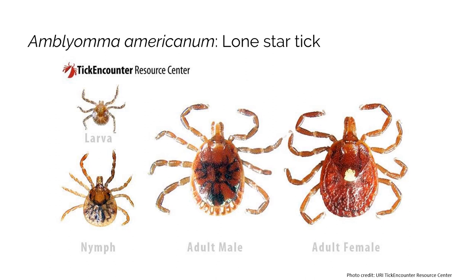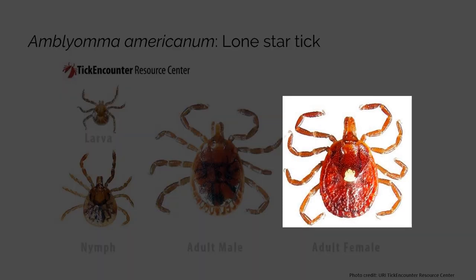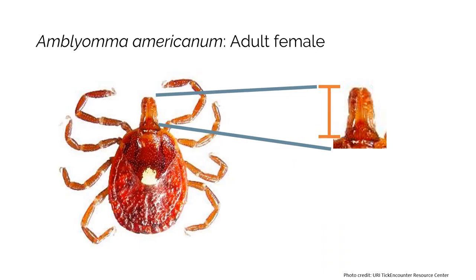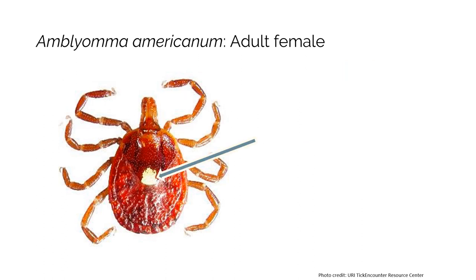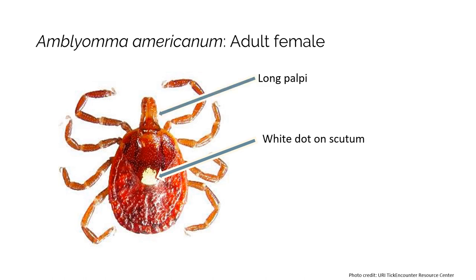Let's take a look at another common tick in the Northeast and Midwest: Amblyomma americanum, otherwise known as the lone star tick. We'll focus on the adult female first. The adult female lone star tick has palpi that are longer than the width of the basis capitulum. They also have a very characteristic white dot at the bottom of the scutum, which can be slightly yellowish too. The white dot on the scutum is the easiest way to recognize the female lone star tick, along with its very circular shape.